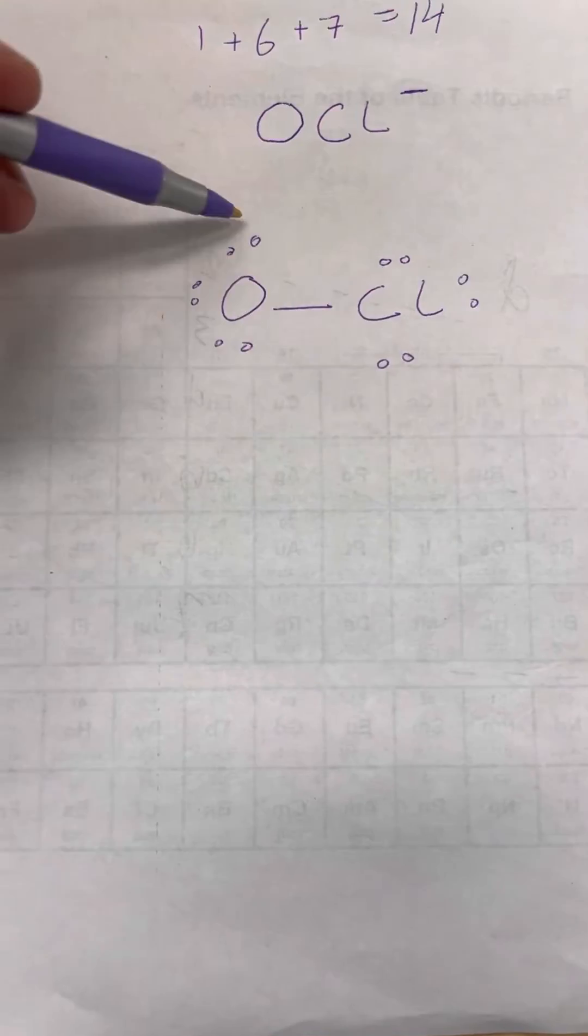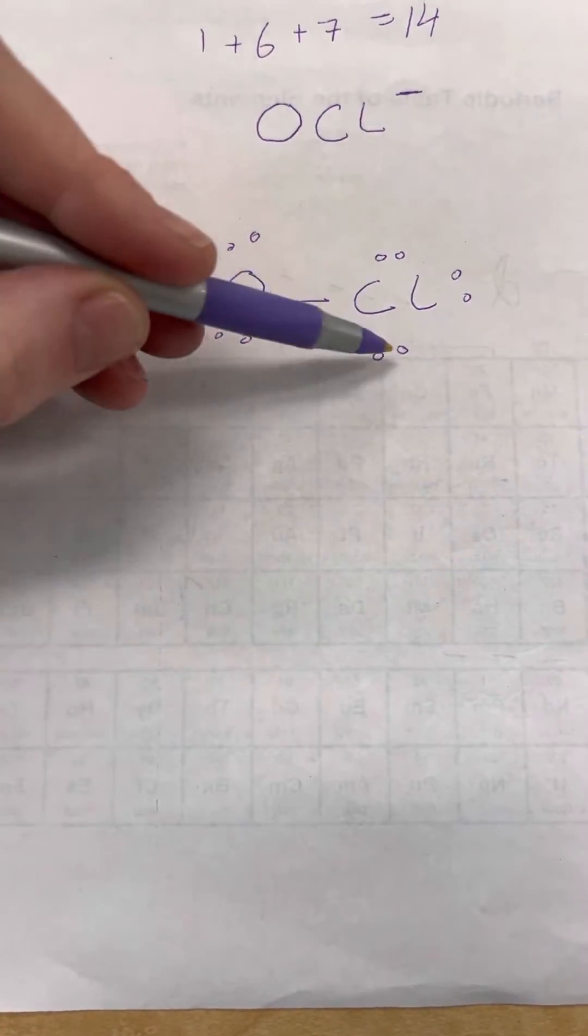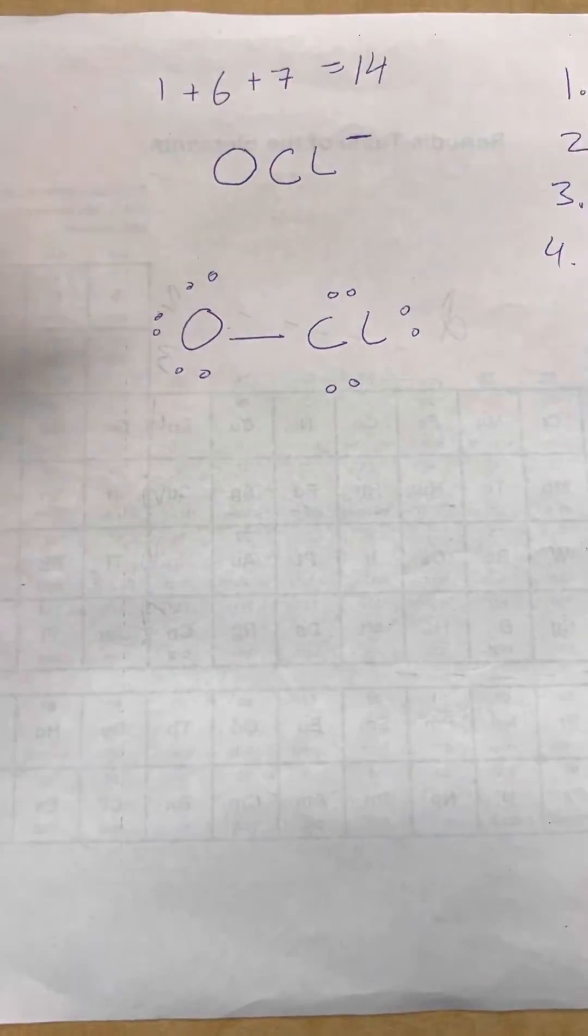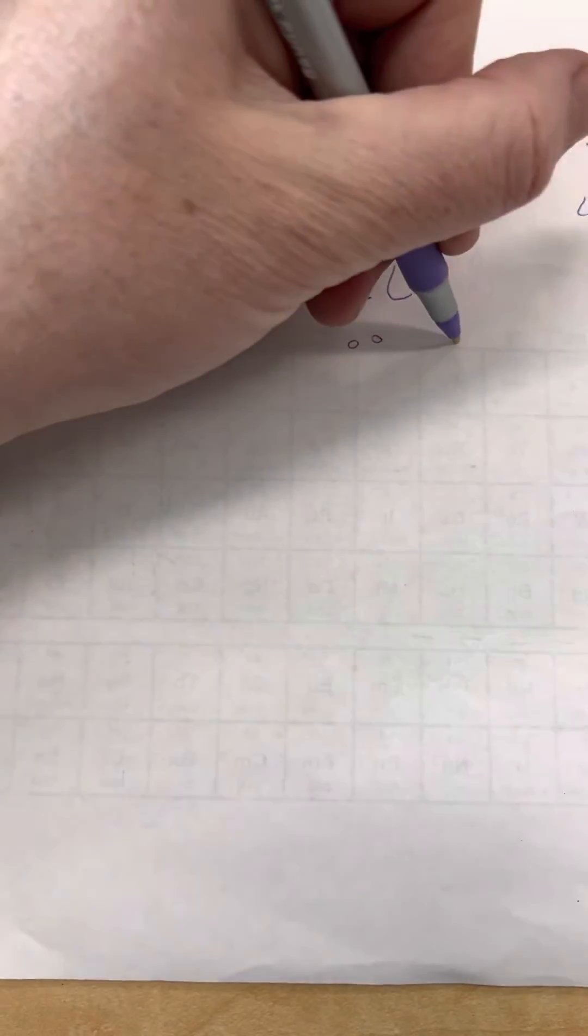And last but not least, we're going to count. We have two, four, six, eight, ten, twelve, fourteen. So we have a total of 14 valence electrons. We're good. This is the final structure.